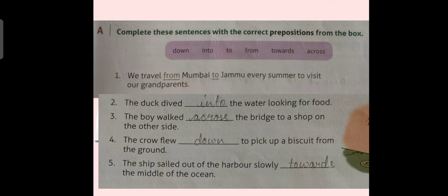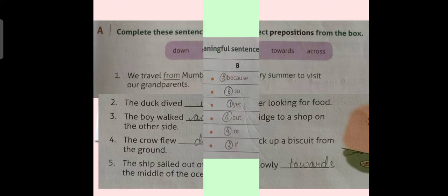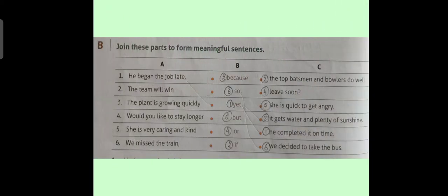The ship sailed out of the harbour slowly towards the middle of the ocean. Here, we have used the preposition towards to fill in the blank. Now, we will do our next exercise.